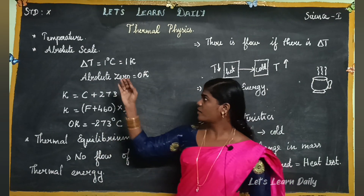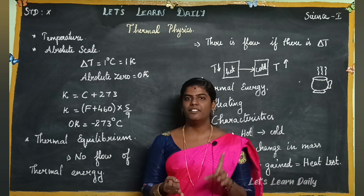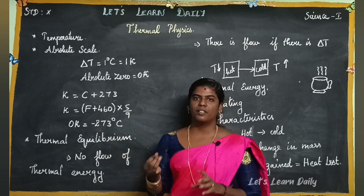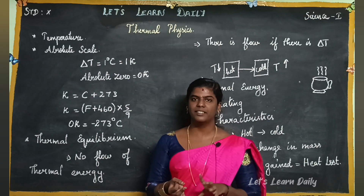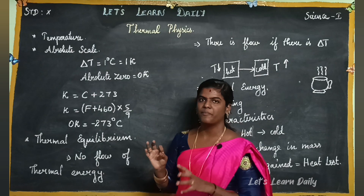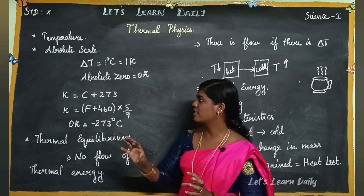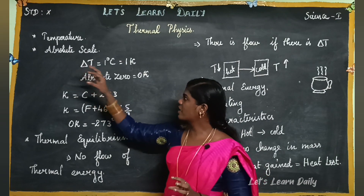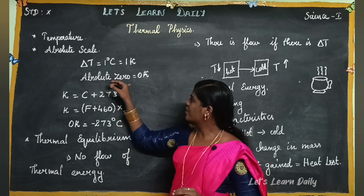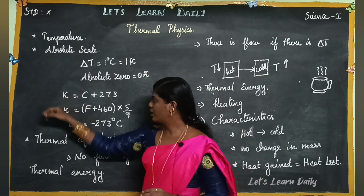To summarize: temperature is the degree of hotness or coldness, unit is Kelvin, and it is a scalar quantity. There are three scales: Kelvin, Fahrenheit, and Celsius. Absolute zero value is 0 Kelvin. The related formula connects temperature scales.